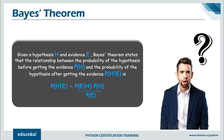Looking at the definition of Bayes' Theorem: given a hypothesis H and evidence E, Bayes' Theorem states that the relationship between the probability of the hypothesis before getting the evidence — P(H) — and the probability of the hypothesis after getting the evidence — P(H|E) — is defined as: P(H|E) = P(E|H) × P(H) / P(E).